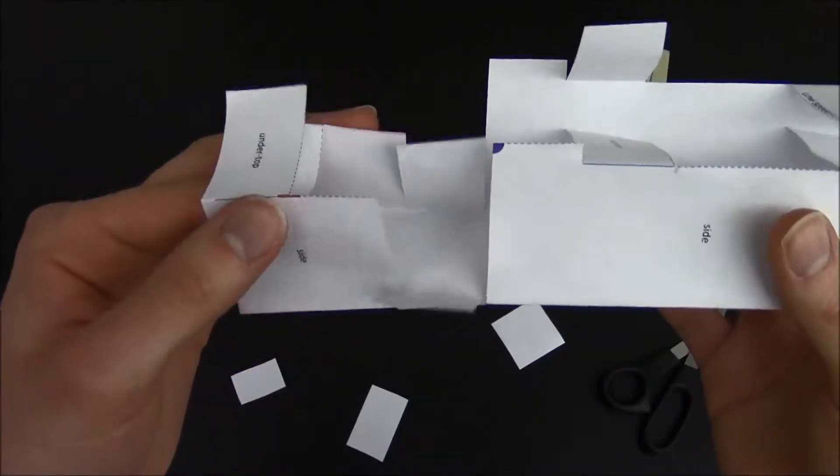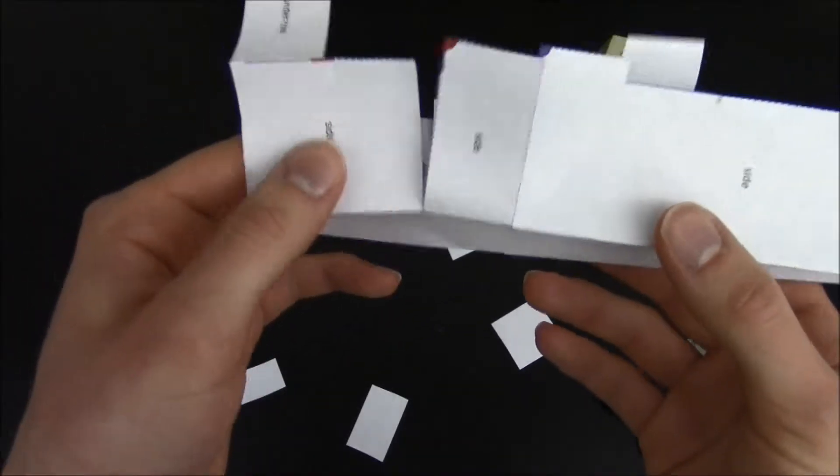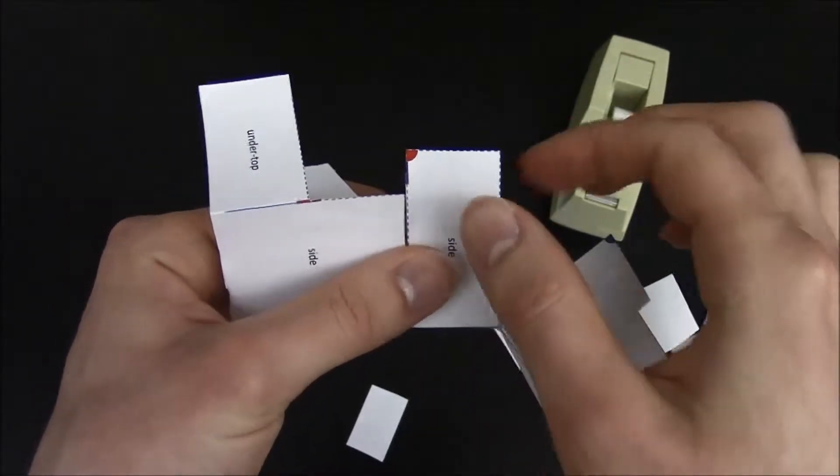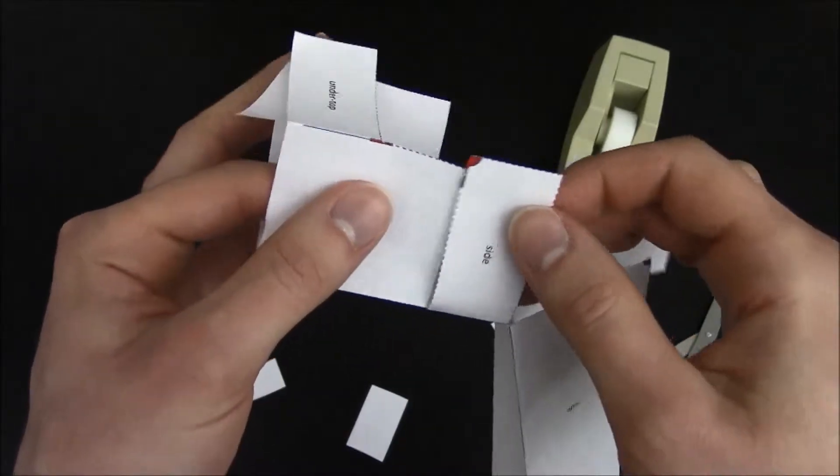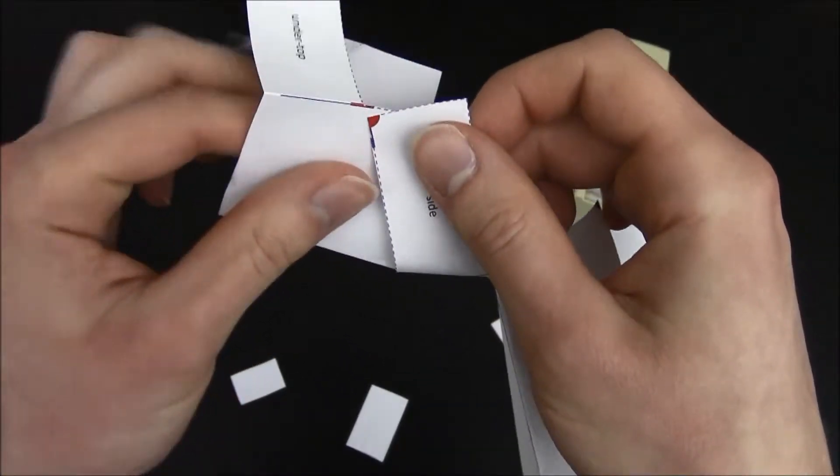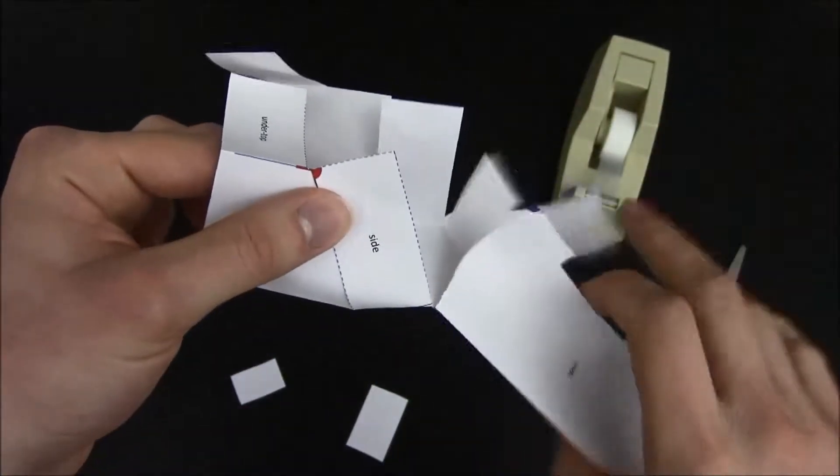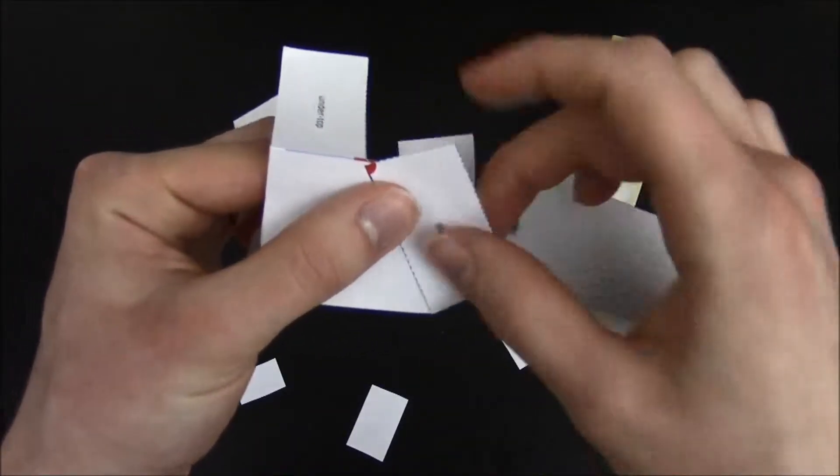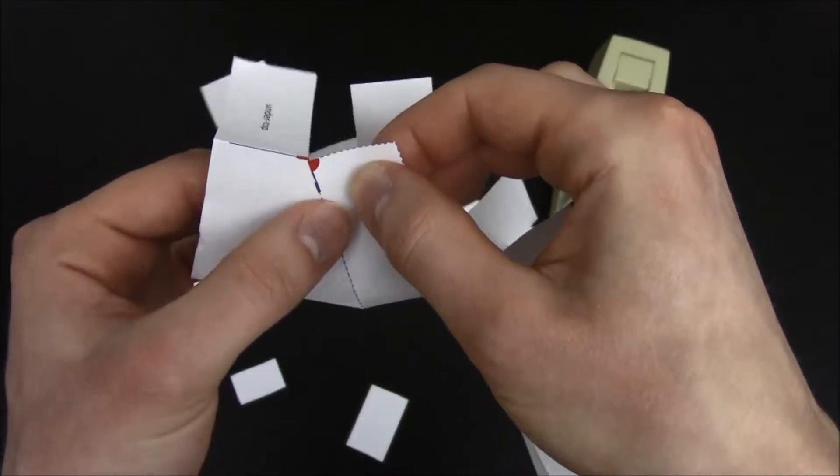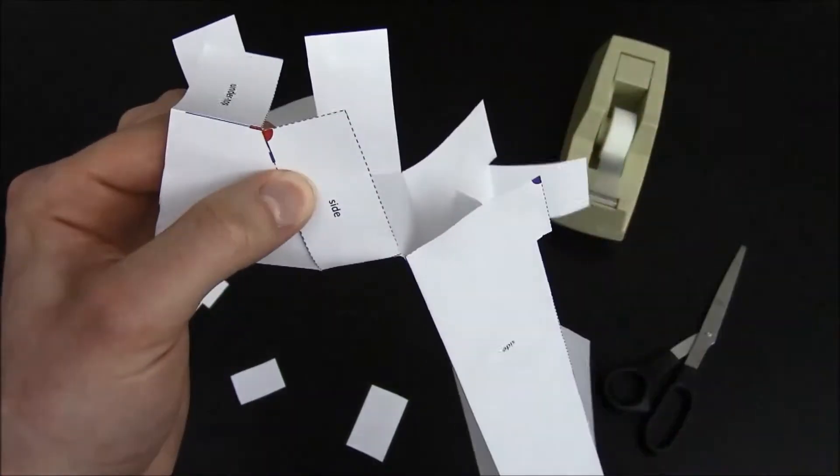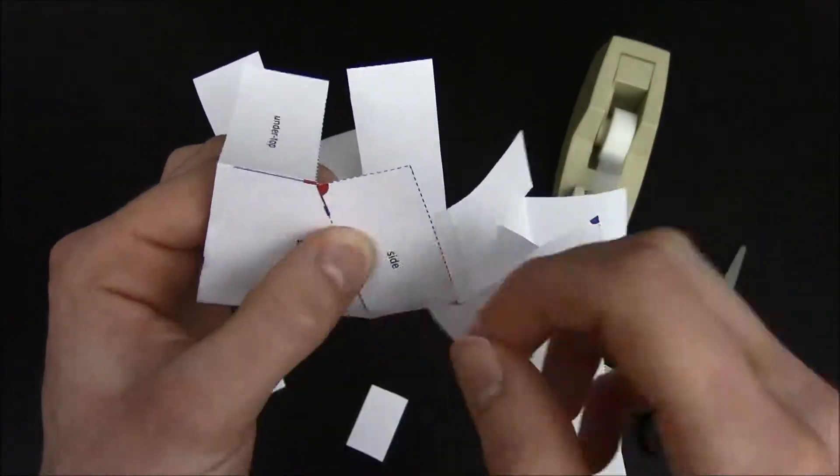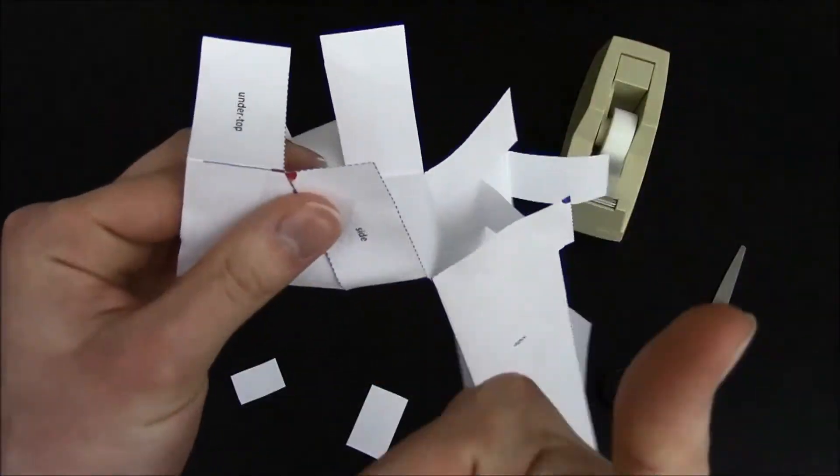It's now time to give our Velocity Initializer some shape. We're going to start by putting together the sides. Notice the little red corner and the little red line. Line up the red corner to the middle of the red line. Hold it in place and take some scotch tape and then secure the joint.